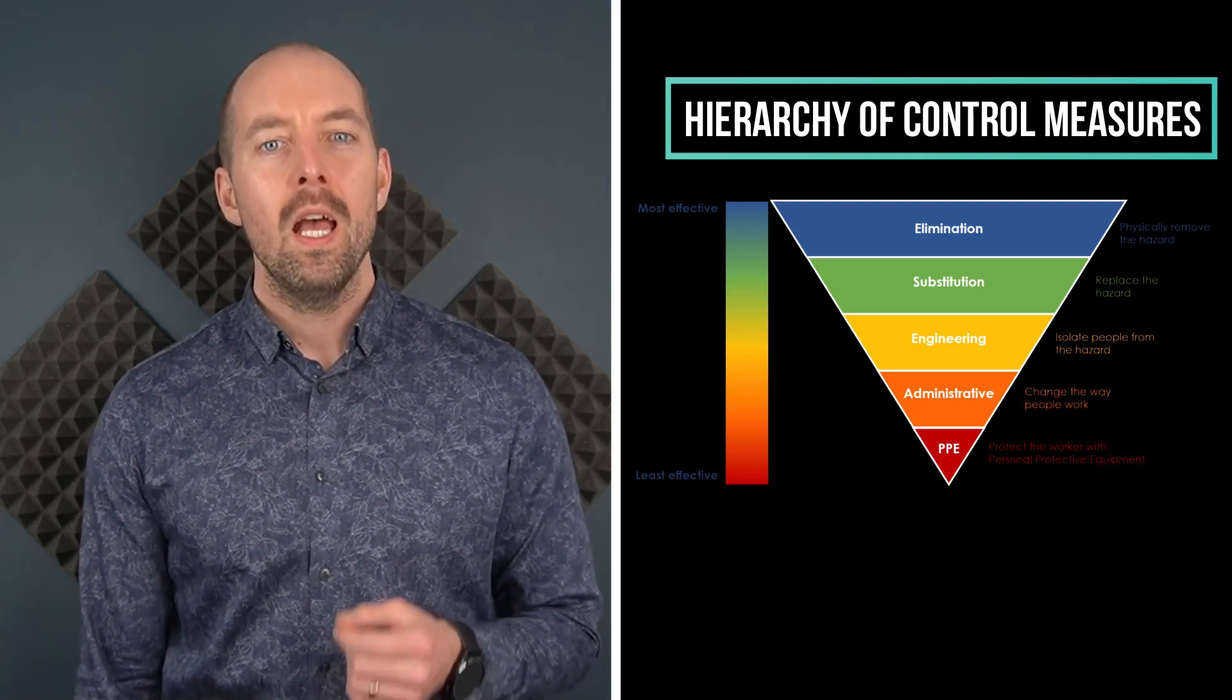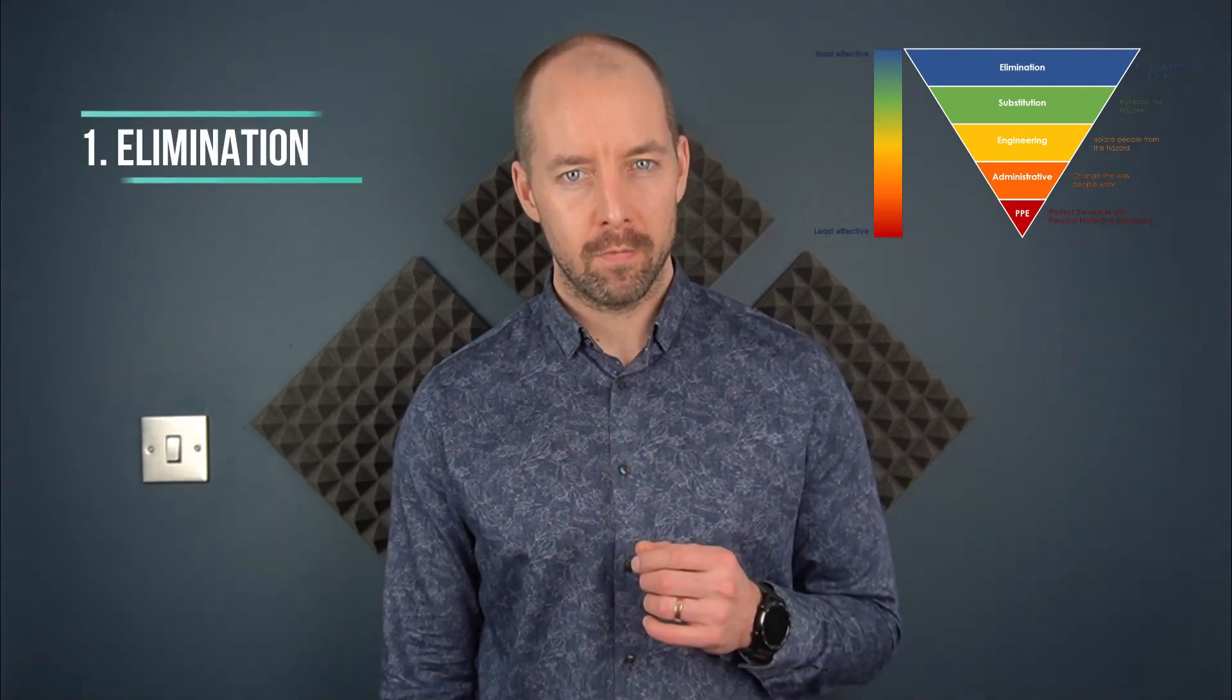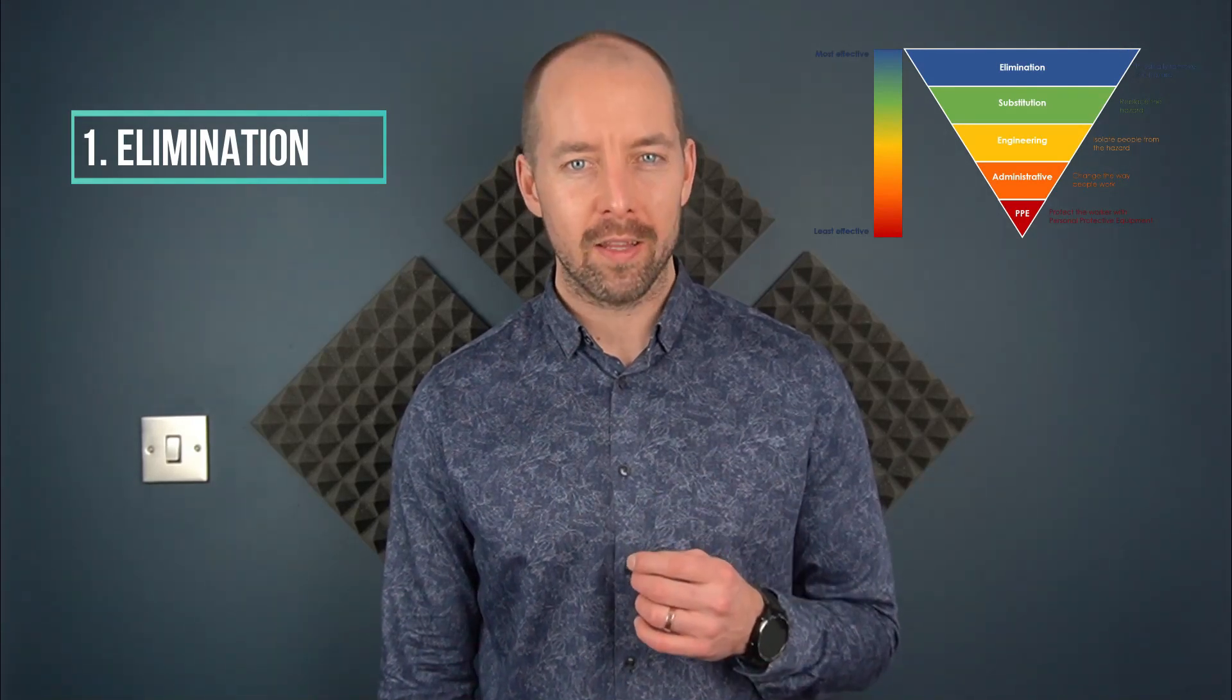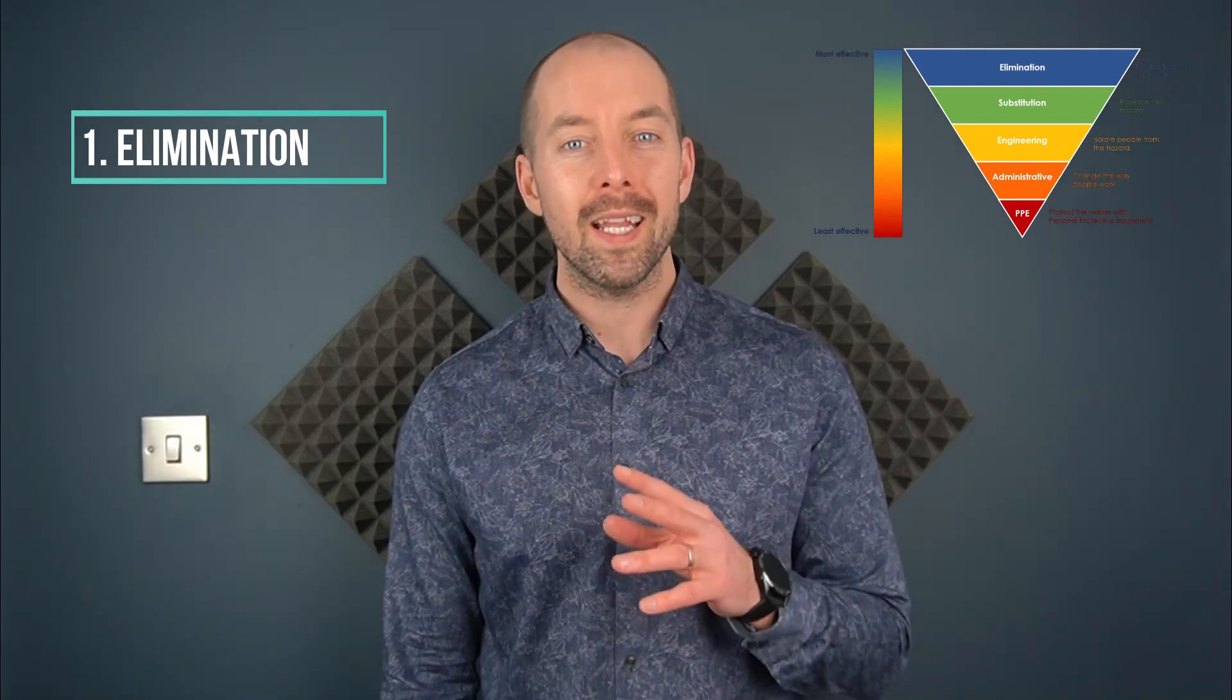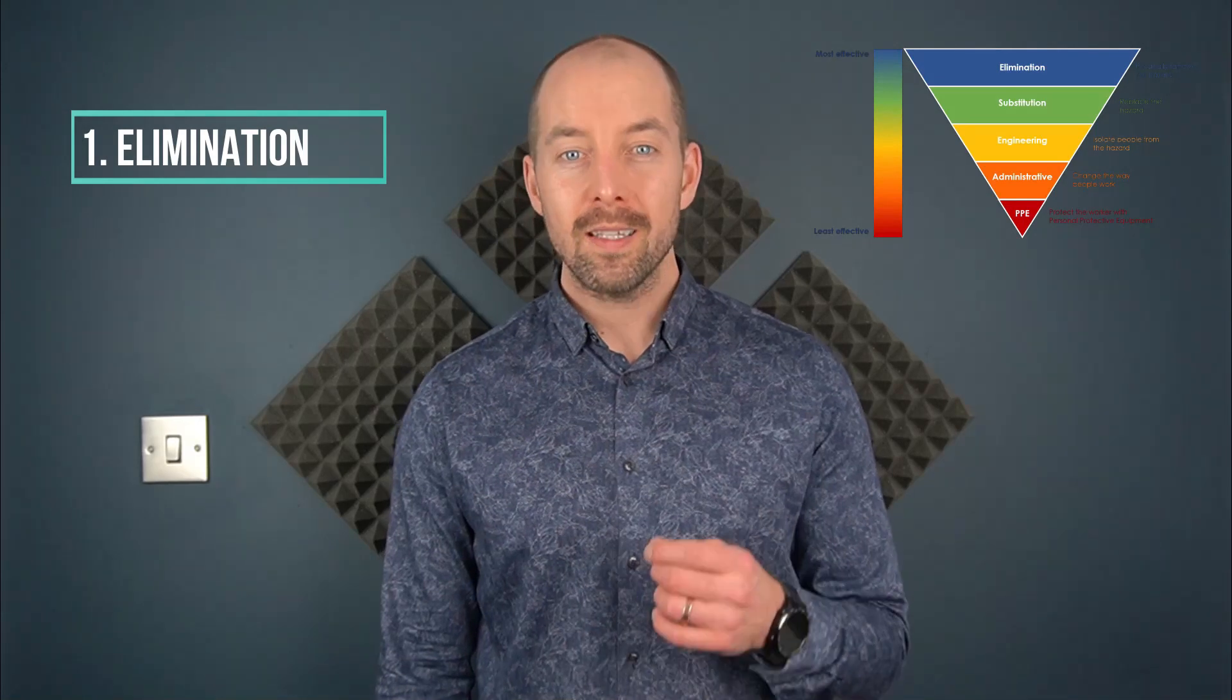Let's look at all these options in more detail. The first and most effective option on the hierarchy of control measures is elimination. What do we mean by elimination? It's removing the hazard entirely, so we're completely removing the risk from whichever scenario we're looking at. This is a great option, but sometimes it's not easy.